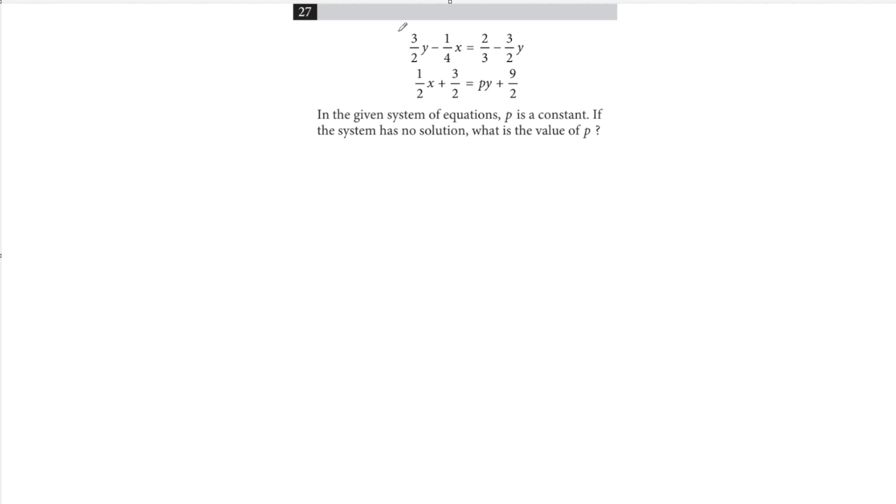The first thing we can do is try to simplify these equations by multiplying through by a common denominator. For equation 1, the common denominator for all of these would be 12, and for equation 2, it would just be 2.